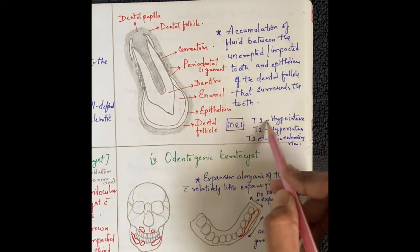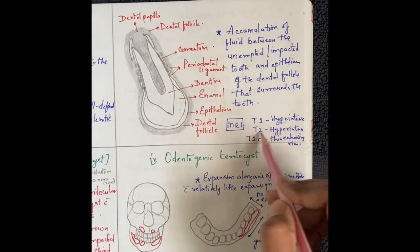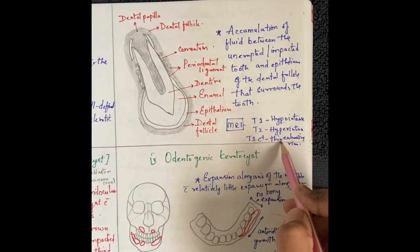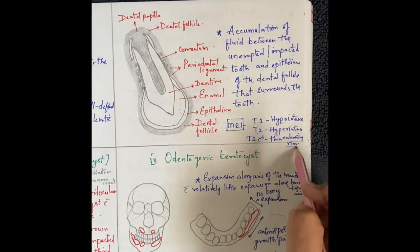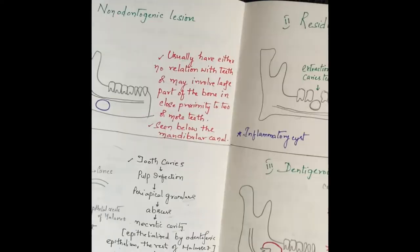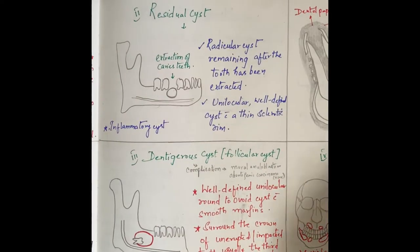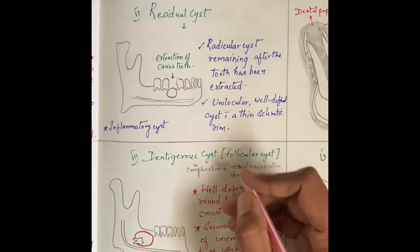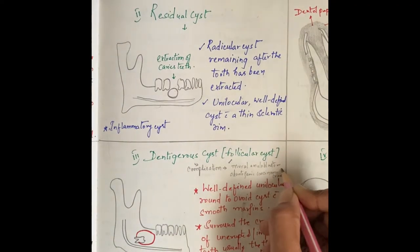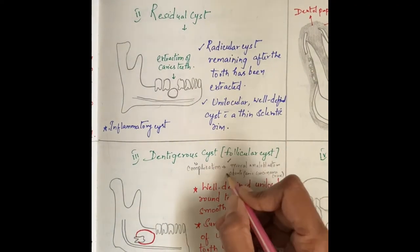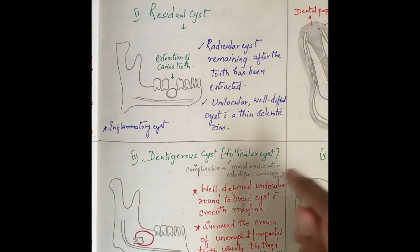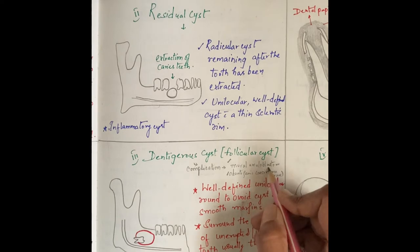On MRI, the dentigerous cyst is T1 hypointense and T2 hyperintense, with a thin enhancing rim on contrast. An important viva question: complications of dentigerous cyst include mural ameloblastoma or odontogenic carcinoma — very rare but possible.